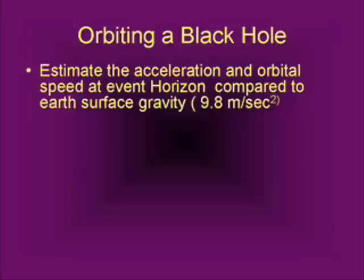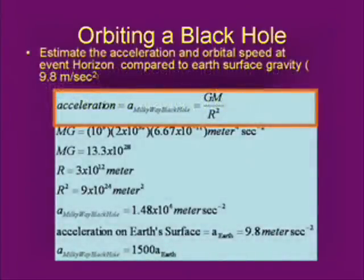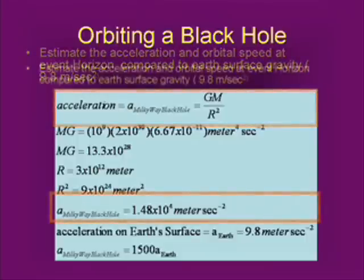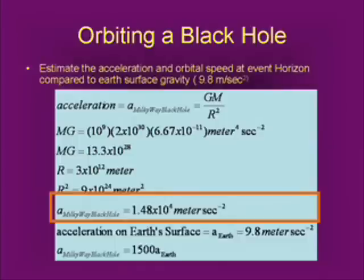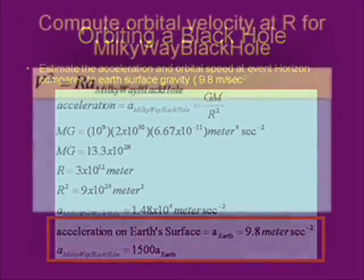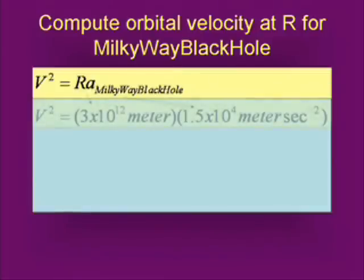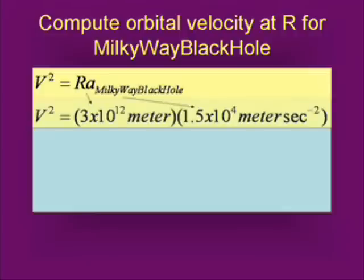Let's cover orbiting a black hole with a small object and estimate what kind of physics we're dealing with here — is it stressful or not? The acceleration is GM over r squared. If you plug in the numbers, you get an acceleration of about 15,000 meters per second squared. Compare that to Earth, which is about 10 meters per second squared surface gravity — the acceleration around the Milky Way black hole is about 1,500 times stronger. Let's compute the speed of an object going just around the event horizon.